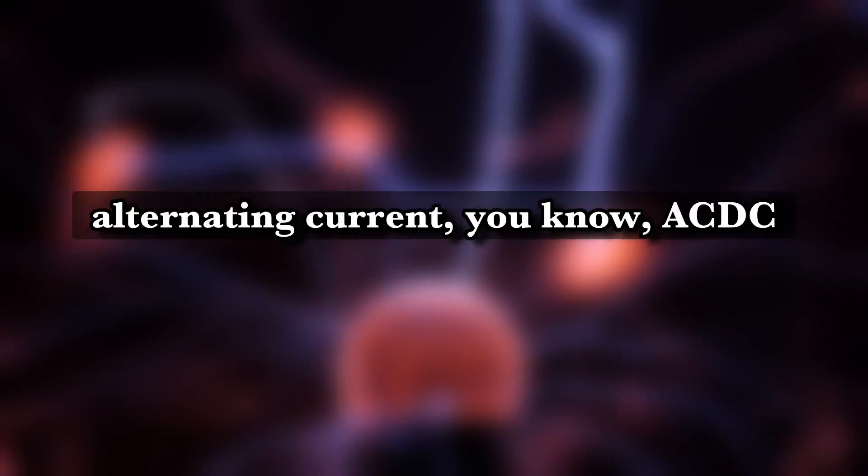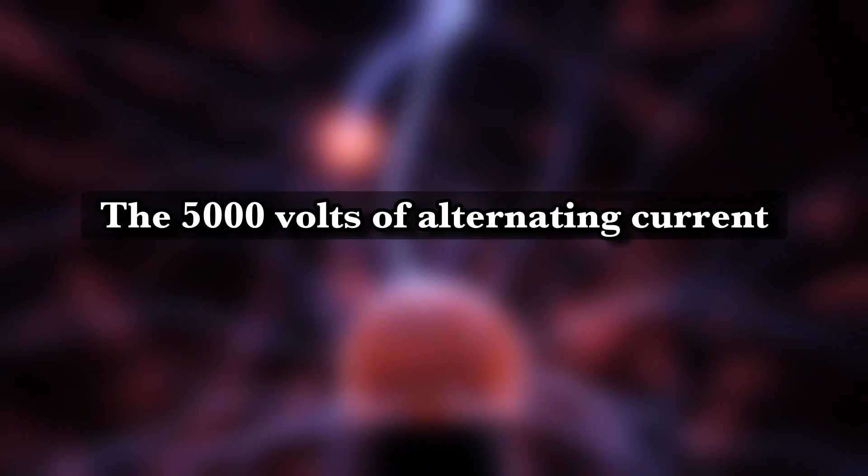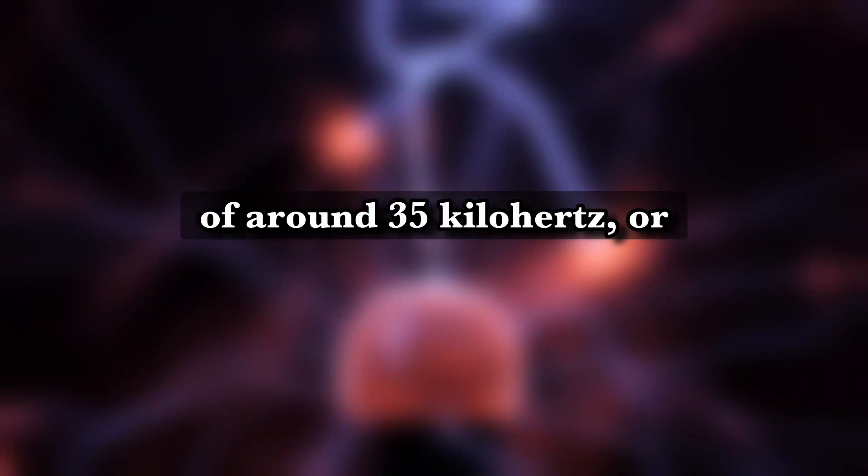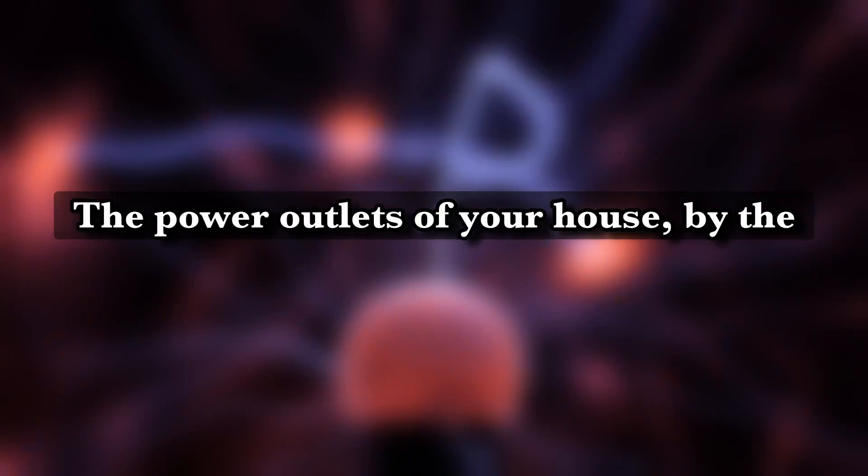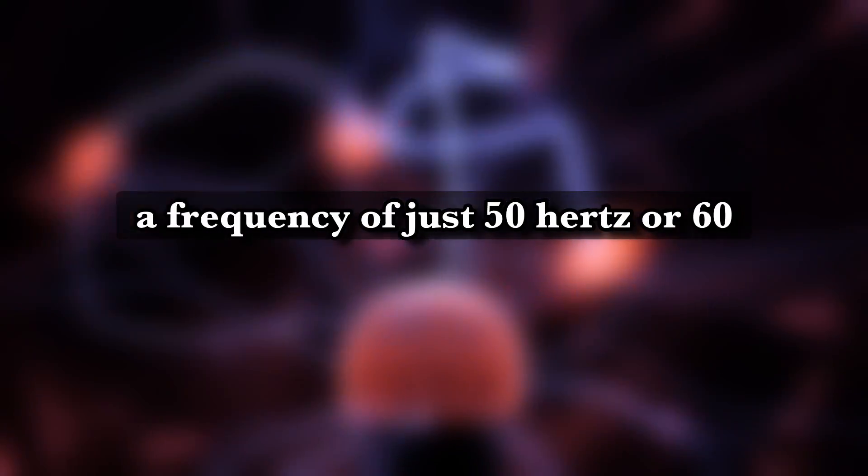And it's also taking direct current and converting it into alternating current. You know, AC, DC and vice versa. The 5,000 volts of alternating current is operating at a frequency of around 35 kilohertz. Or 35,000 hertz. The power outlets of your house, by the way, operate at 100 volts to 250 volts. And at a frequency of just 50 hertz or 60 hertz. Voltages and frequencies depending on where you live.